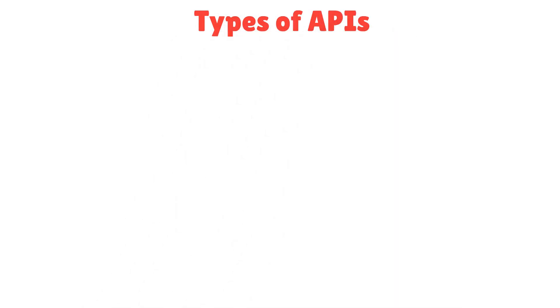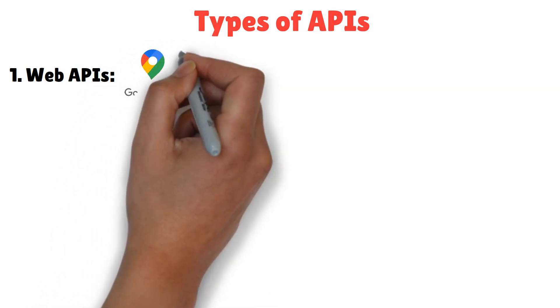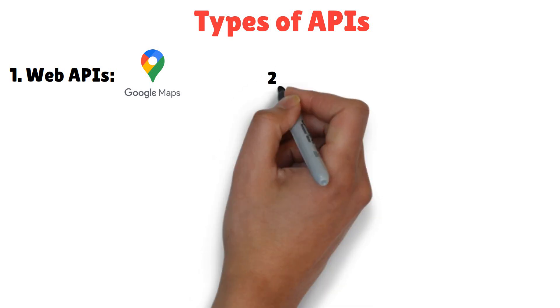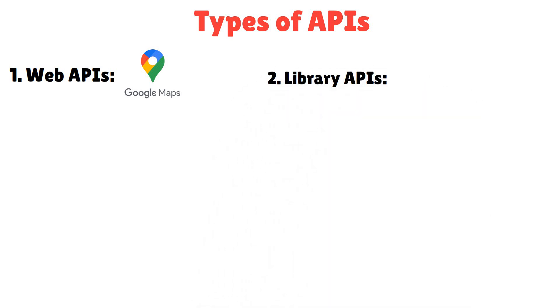APIs come in different flavors, just like your favorite cuisine. Web APIs for connecting online systems. Think of Google Maps API for map features. Library APIs. Built into programming libraries. For example, Python's NumPy for math.